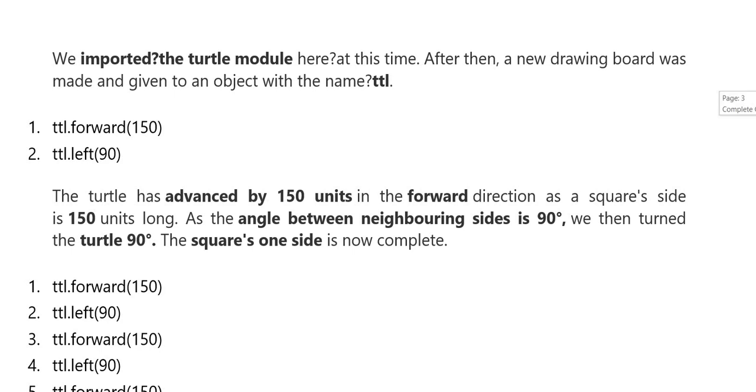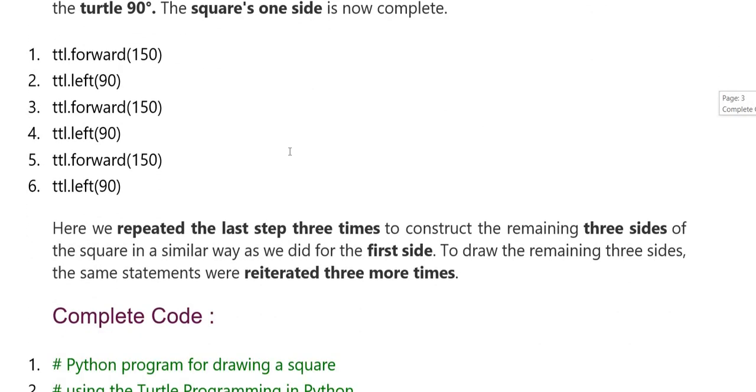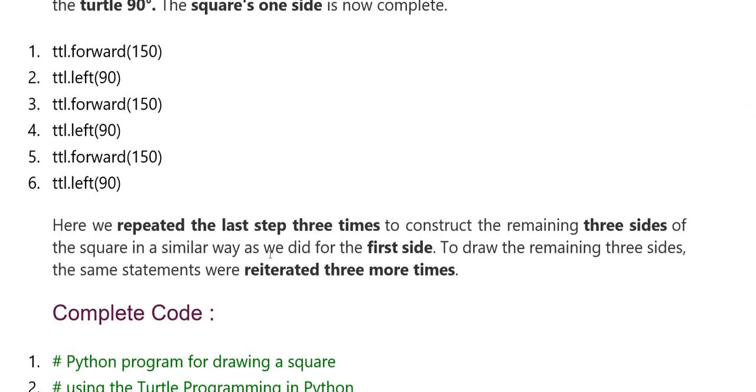Forward, which we have 150. Left, which we have represented. Look at the angles. Repeat the last step three times. The remaining three sides of the square the same way. Here we have forward three times, left three times. We have to repeat forward again and again.